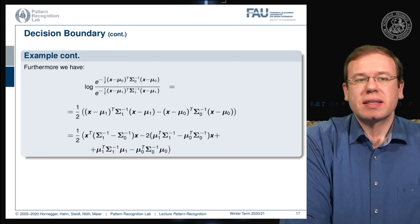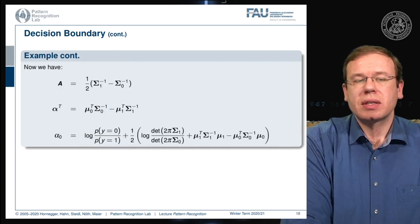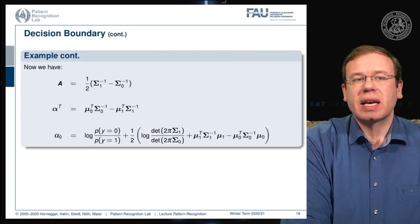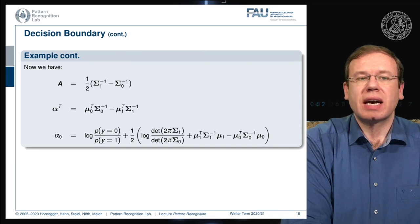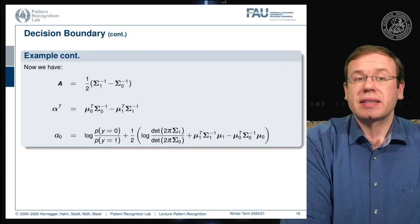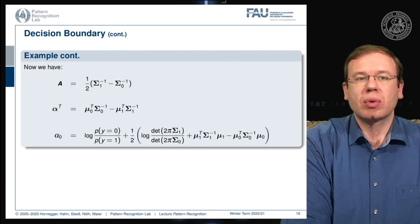We can rearrange this and map it to our original definition for the decision boundary. This gives us the matrix A constructed from the two covariance matrices. Then we have vector α^T, which is constructed from the means multiplied by the inverse covariance matrices, and we have α₀ that is essentially composed of the constant term c seen earlier plus the additional constant term derived on the previous slide. So we can find the decision boundary of the intersection of two Gaussians always as this kind of quadratic problem.